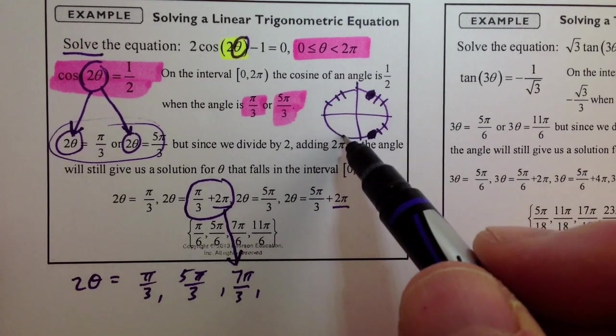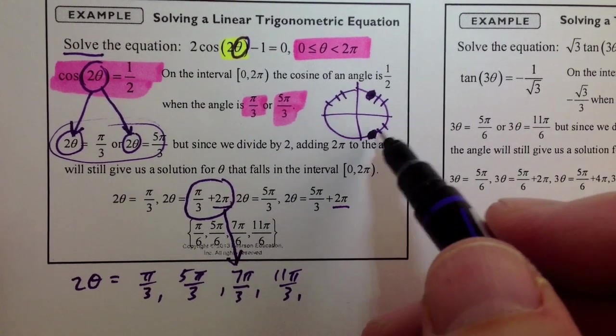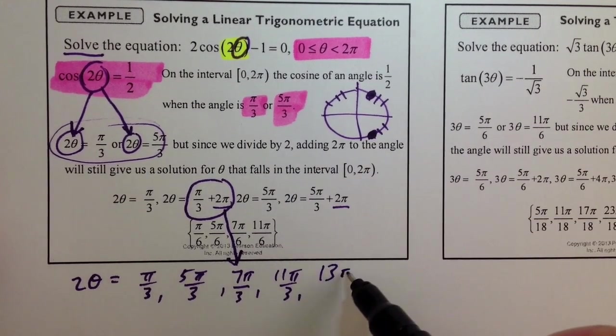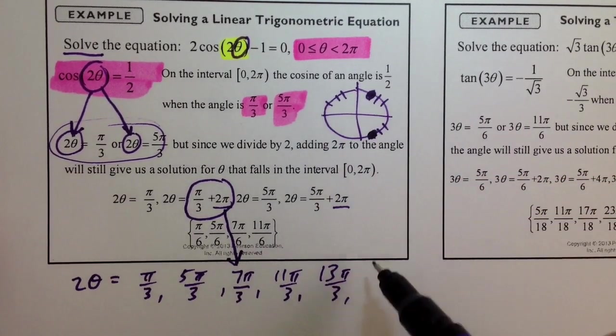11 pi over 3. I would keep going, 12, 13 pi over 3, because this will show you something, 14, 15, 16, 17 pi over 3. And if you don't know what I'm doing here,